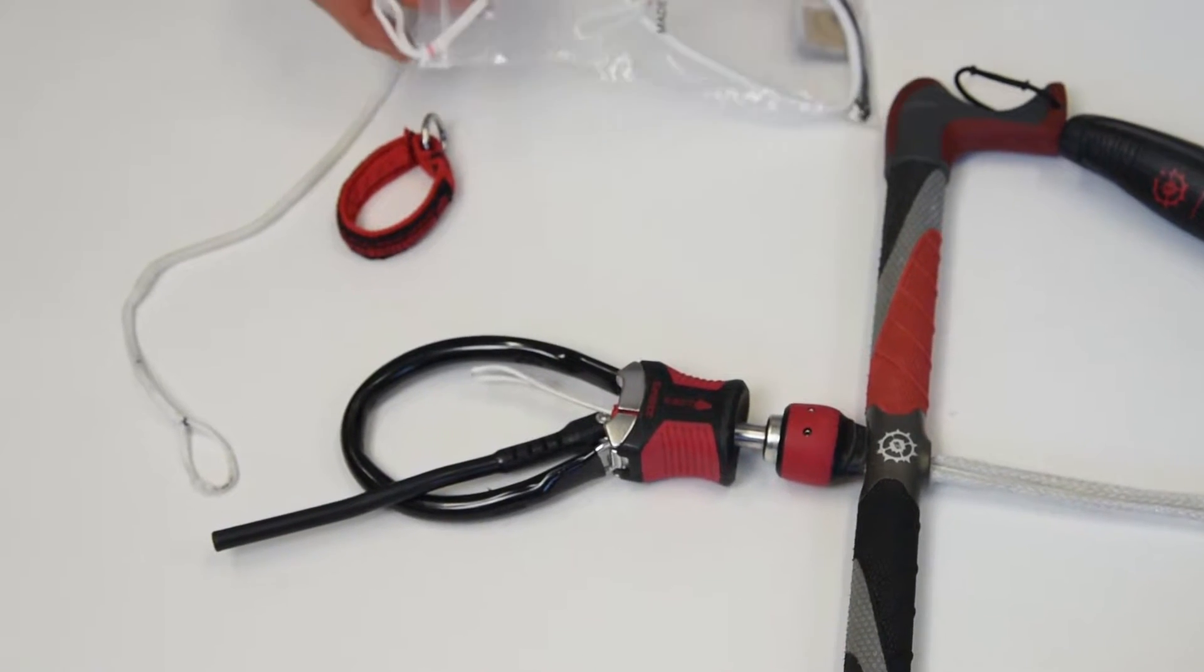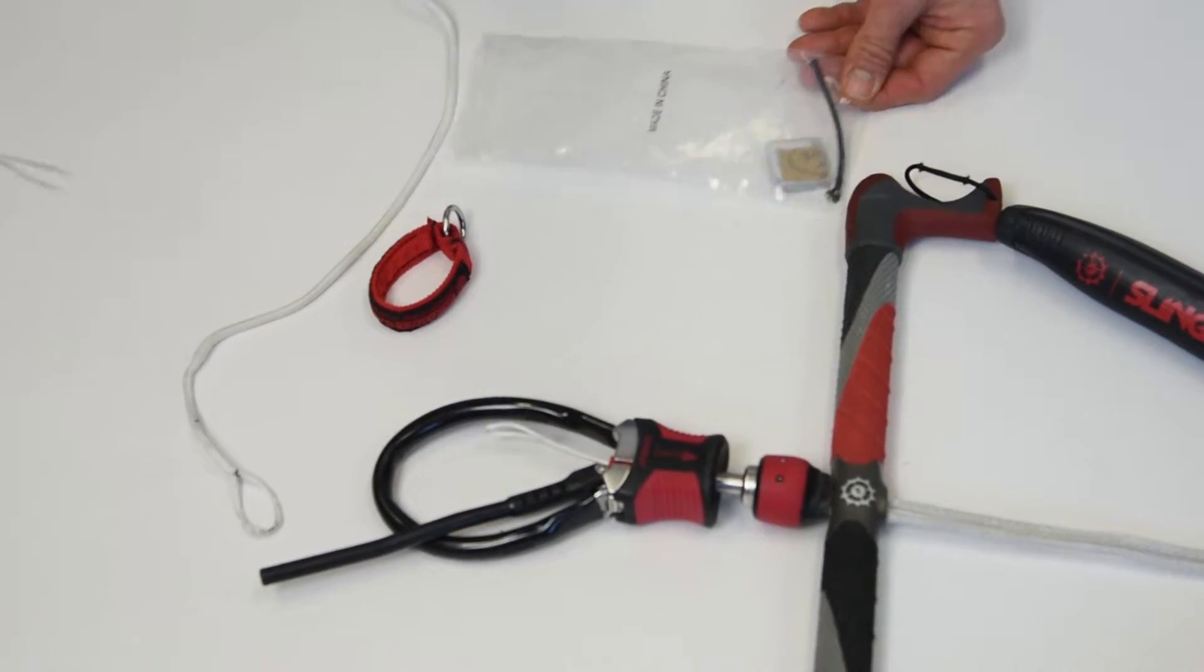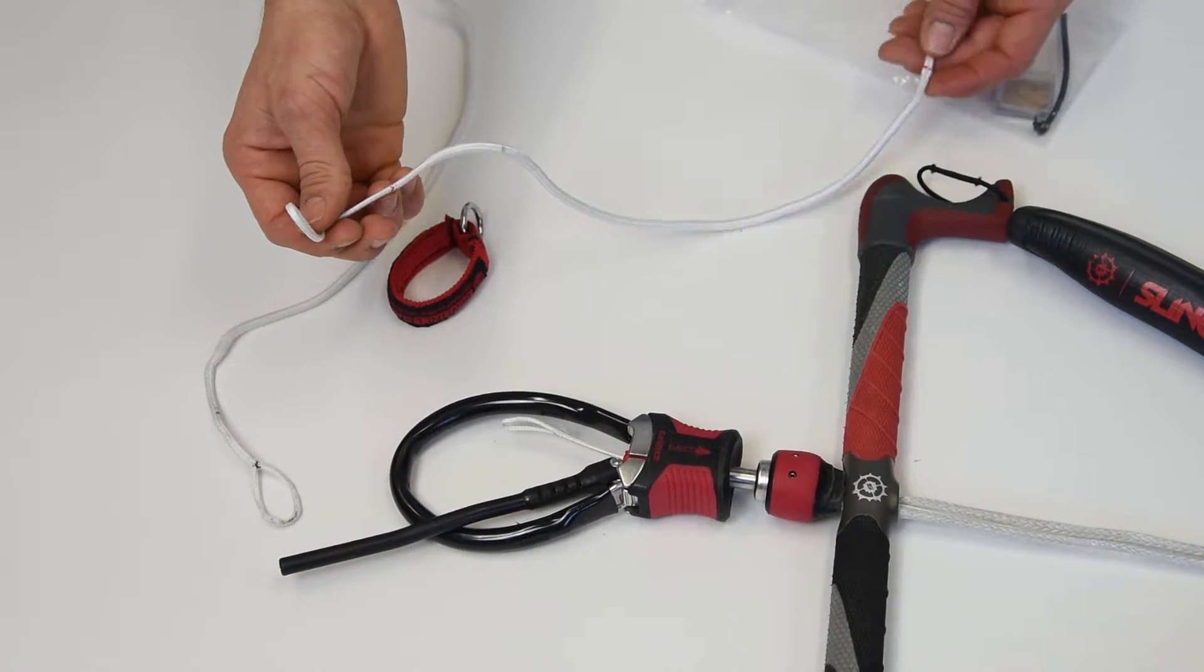A spare CSS bungee comes with every new slingshot bar. If you no longer have the spare bungee you can order one from Slingshot through our website.